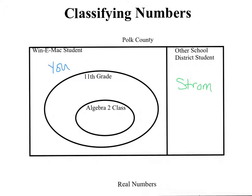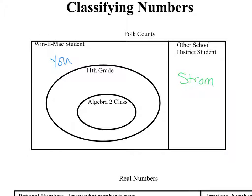You'll also notice that in here I have this circle right here. This circle is contained within this box, so anything that belongs in here is also in here. Which would make sense — you belong in that circle. More specifically than just being a Winnie Mac student, you are an 11th grade student. So technically you belong in this circle because you are 11th grade, but you are also a Winnie Mac student.